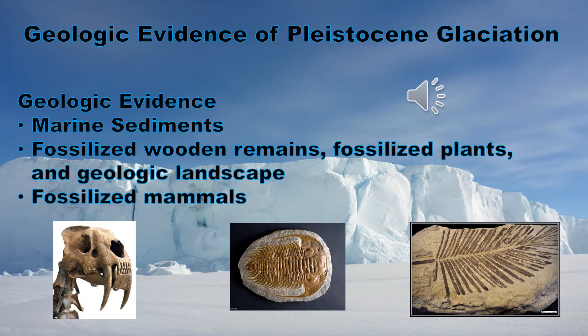Geologic evidence of Pleistocene glaciation can include marine sediments. The presence of coarse sand-sized elastic detritus and small pebbles in deep sea sediments far from land can only be explained by ice rafting. Another type of geologic evidence can be fossilized wooden remains, fossilized plants, and geologic landscape. For example, in Africa, arid and open grasslands were replaced by a wooded environment consisting of a wetter landscape, which is geologic evidence that the landscape changed drastically. One more type of geologic evidence can be fossilized mammals.